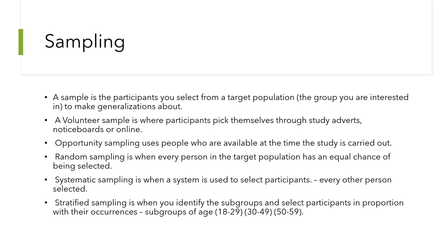Random sampling is very important for RCTs — randomized control trials. You need to allocate participants into a control group and an active intervention group without any bias. To avoid bias in assignment, you typically use some kind of random sampling software package available online.